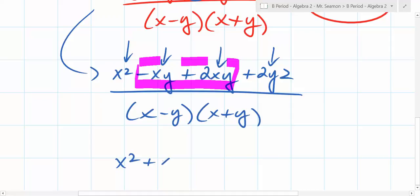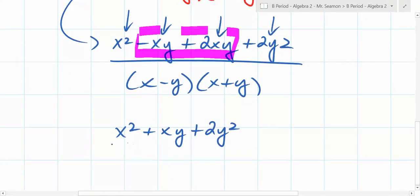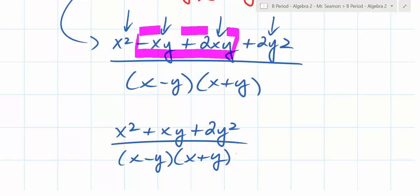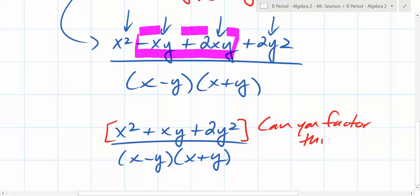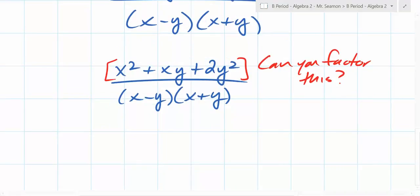X squared plus XY plus 2Y squared all over X minus Y times X plus Y. And at this point, if you were able to simplify this, what would you have to be able to do? You would have to be able to do what to the numerator? The only thing you'd look into is, can you factor this? What do you think? Yes. Okay. You think you can?